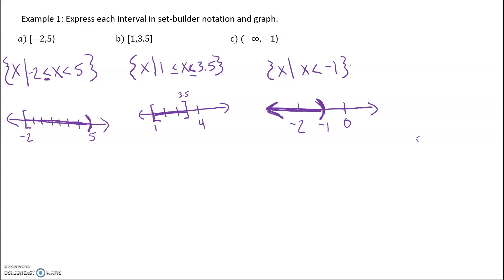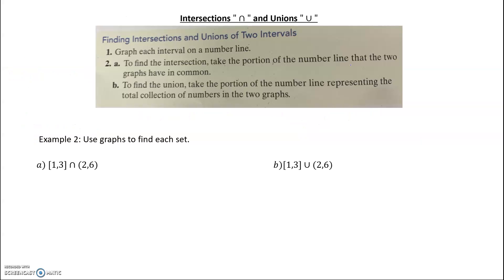Now, you could have some intersections and unions. Intersection looks kind of like an 'n,' and union looks like a 'u.' Intersection is what they have in common. Union is everything put together — the joint of both sets.